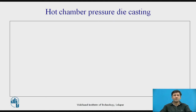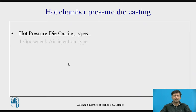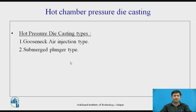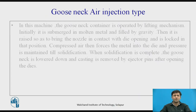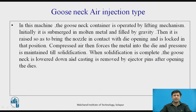Hot chamber pressure die castings are generally classified into two types: gooseneck air injection type and submerged plunger type. In the gooseneck type, the container is operated by a lifting mechanism. Initially it is submerged in molten metal and filled by gravity. It is then raised to bring the nozzle in contact with the die opening and locked. Compressed air forces the metal into the die, and pressure is maintained until solidification. When complete, the gooseneck is lowered and the casting is removed by ejector pins.